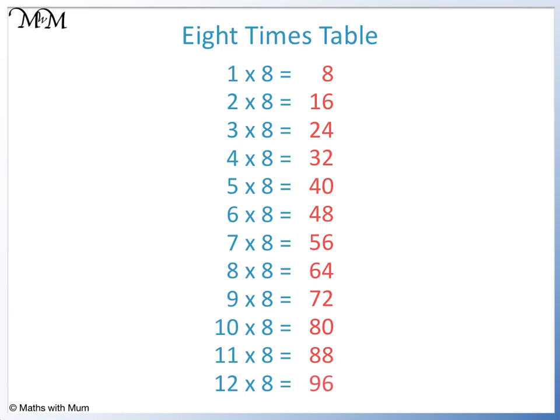We call each number in the 8 times table a multiple of 8. 8 is the first number in the 8 times table, so 8 is the first multiple of 8.